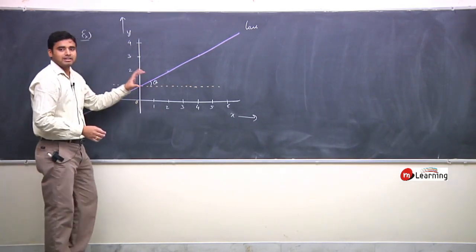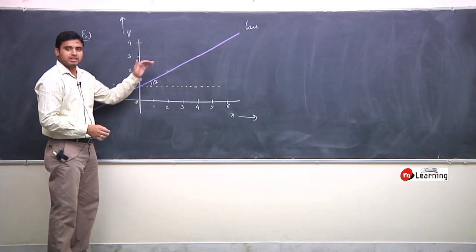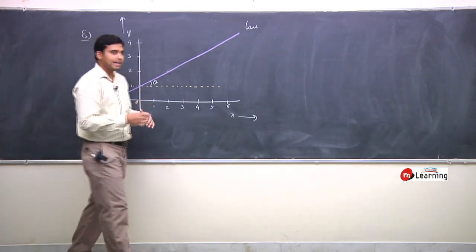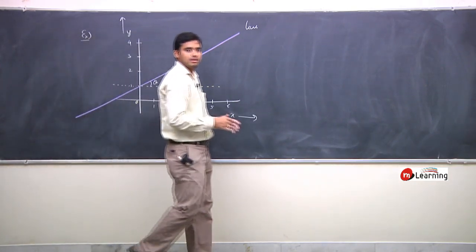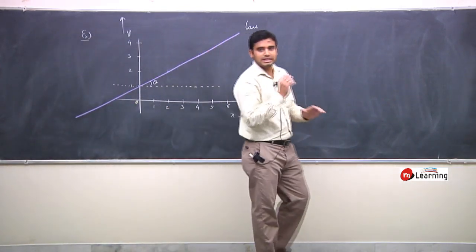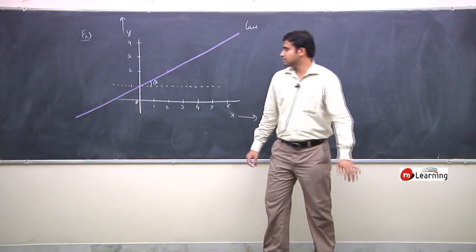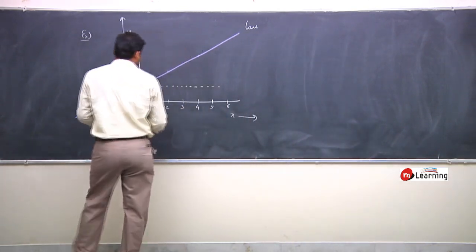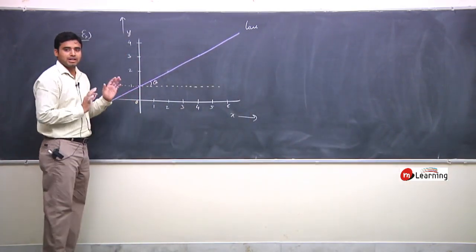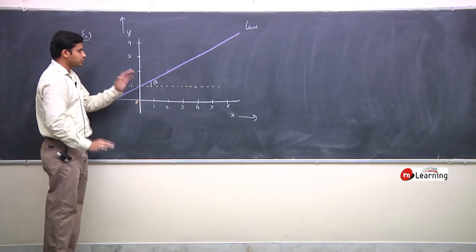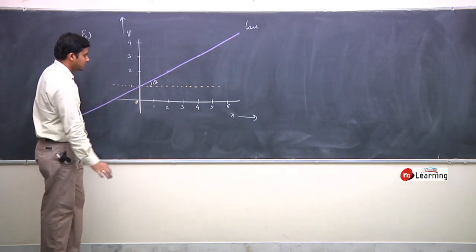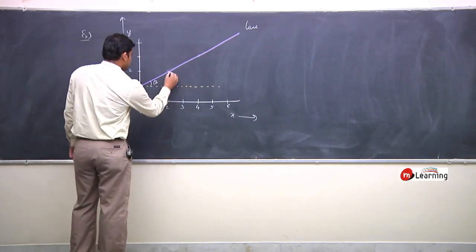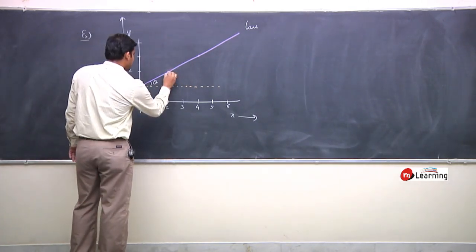You can make a right-angle triangle with theta. In the right-angle triangle, you can find out theta. Whatever is suitable — for example, I have this point — you can make a right-angle triangle.